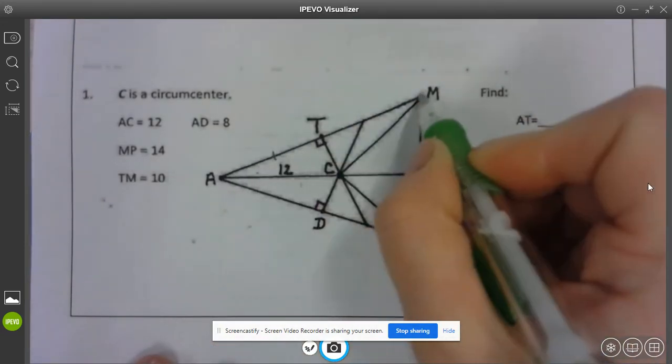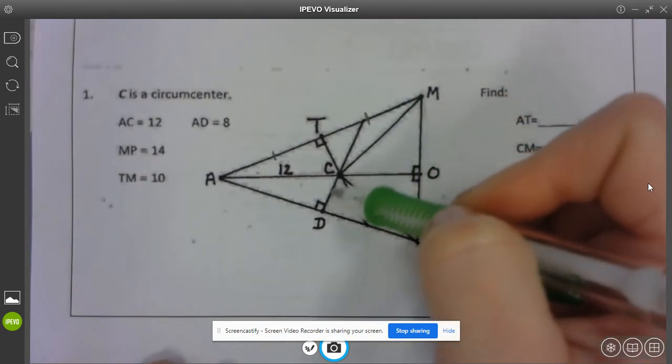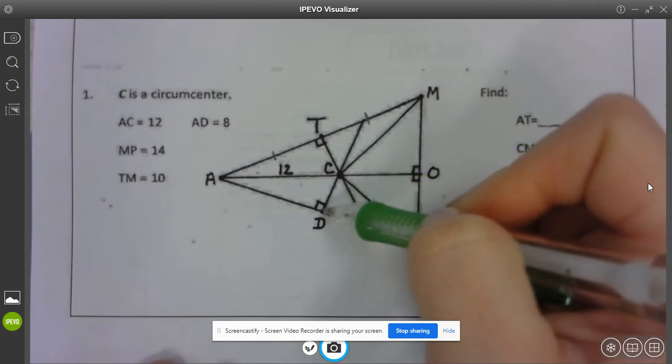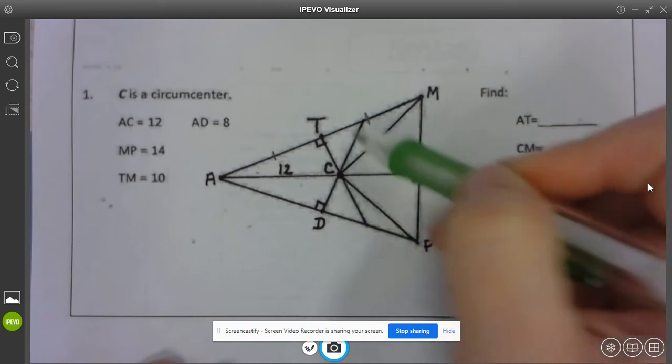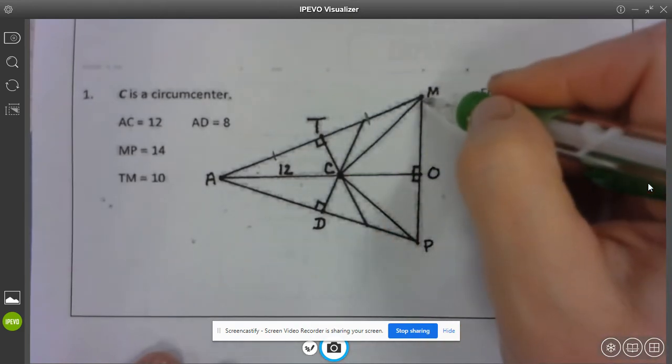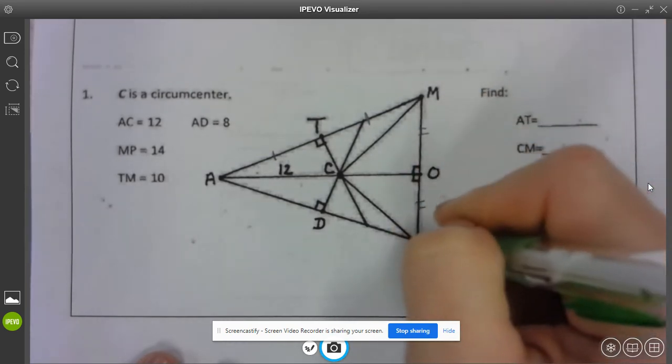So let's start here on the top. So AT and TM are going to be congruent. Now I'm not going to let this distract me. I'm thinking of all of TM here. On this side, I'm going to have MO being congruent to OP.